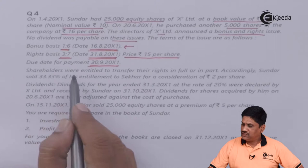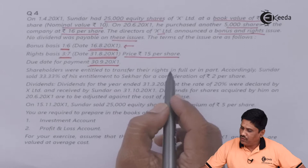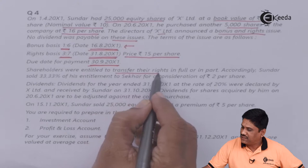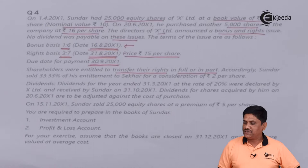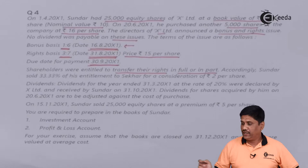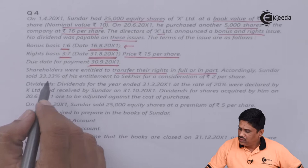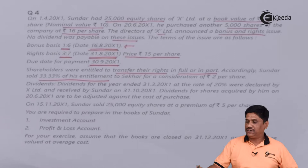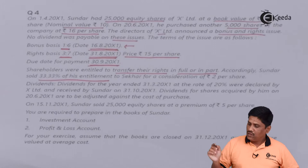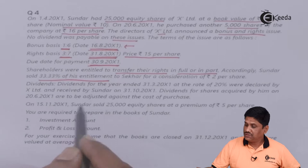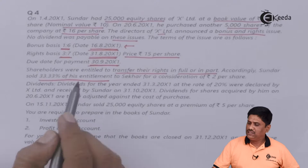Shareholders were entitled to transfer their rights in full or in part. This is called renunciation of shares — if you can't buy the right shares, you can transfer your rights fully or in part. Accordingly, Sundar sold 33.33% of his entitlement — that is one-third of his right share entitlement — to others.